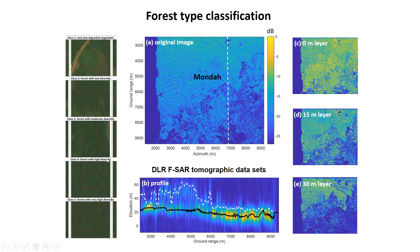For the classification task, we consider a random forest approach to study the performance. For the tomographic layers, with each polarization, we exploit 9 layers at 5-meter intervals, for example from 0 meters to 40 meters. So we have 27 features as inputs for random forest classification.